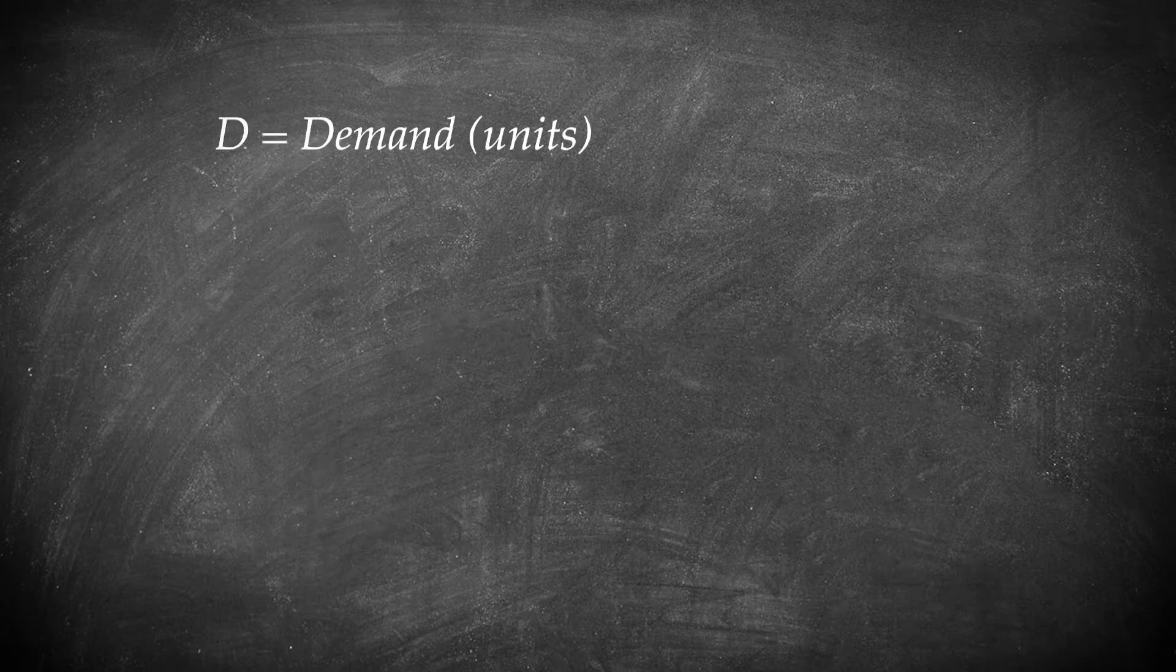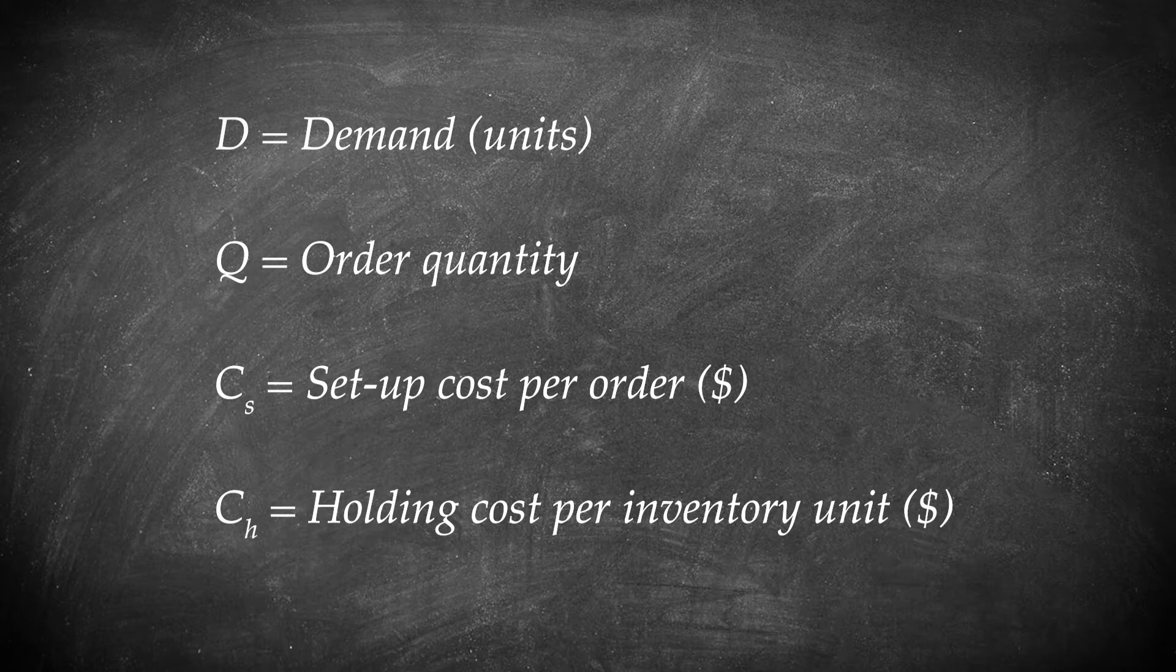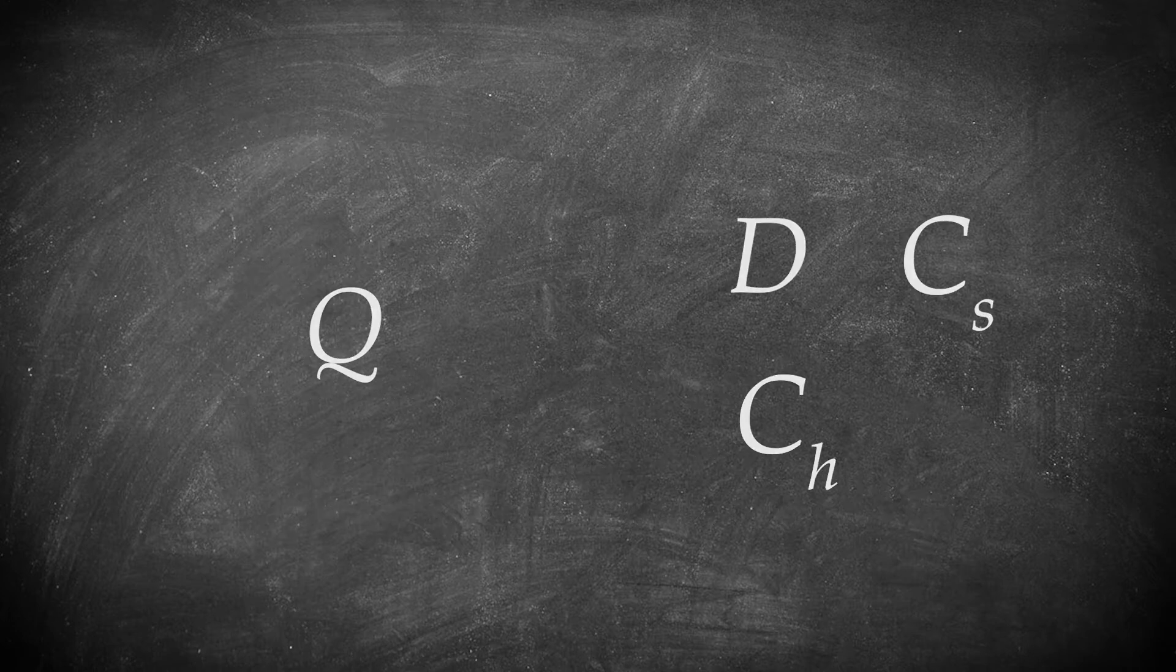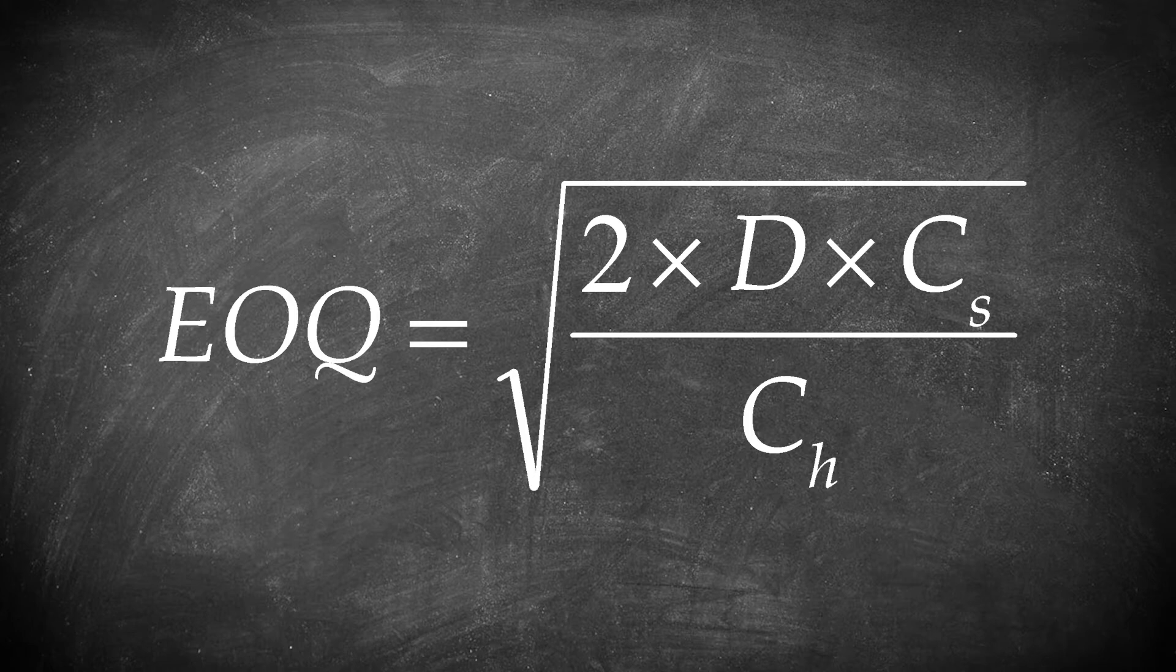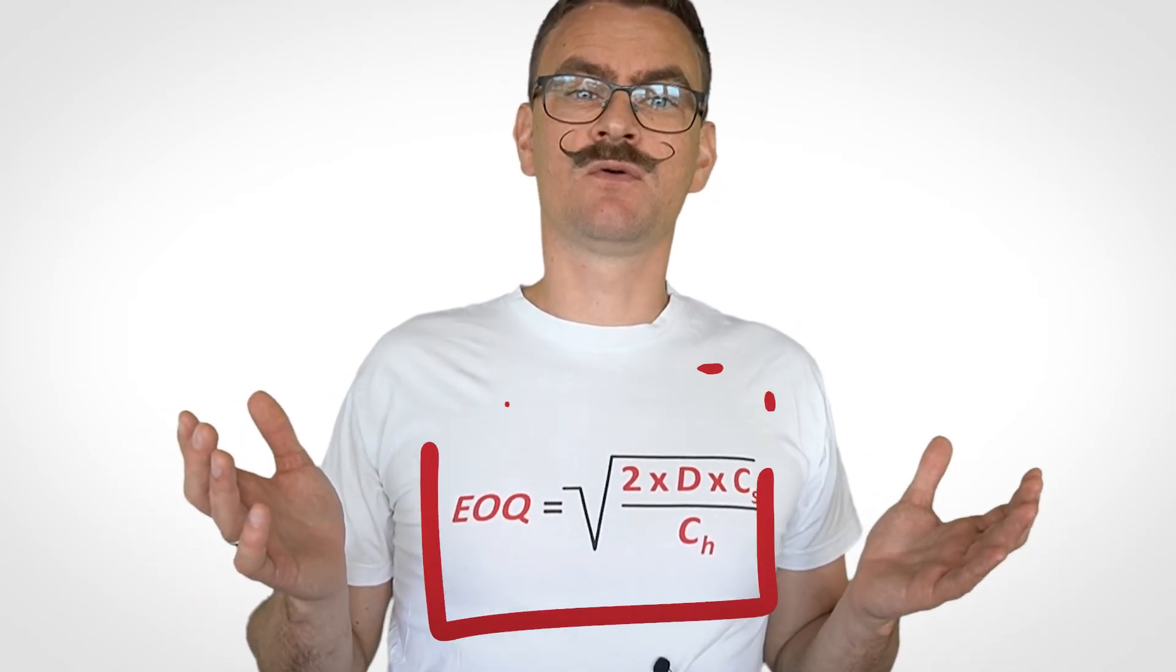If you let D be the annual demand in units, Q be the order quantity, CS be the setup cost per order, and CH be the inventory holding cost, the economic order quantity is given by the square root of two times annual demand times order setup cost over inventory holding cost. So that's the classic EOQ formula.